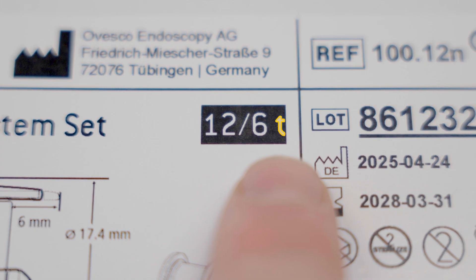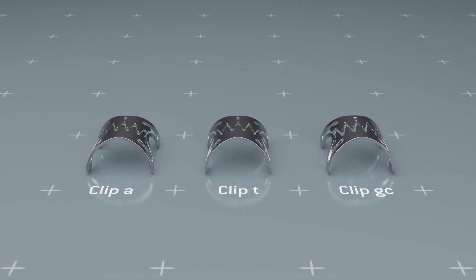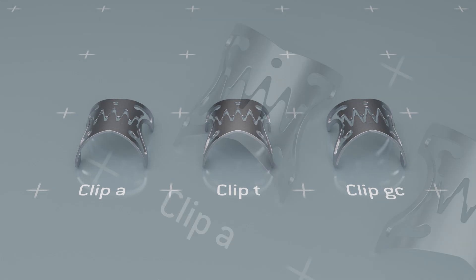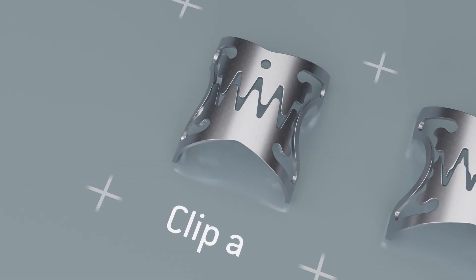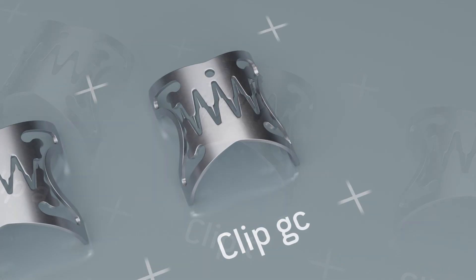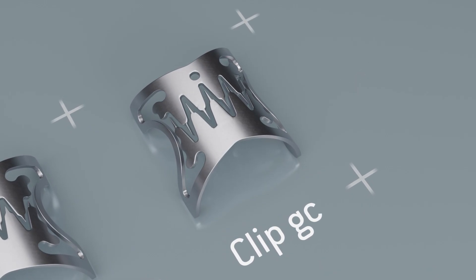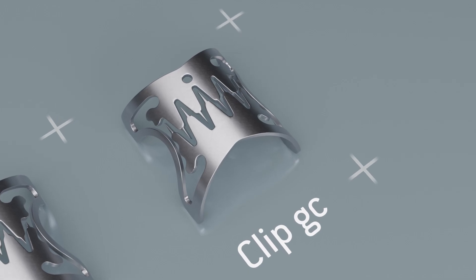The latter stands for the clip-tooth geometry. There are three different versions of the OTSC NEO clip: Type A with blunt teeth, type T with pointed teeth, and type GC with longer pointed teeth, specifically for the treatment of perforations and lesions in the stomach.